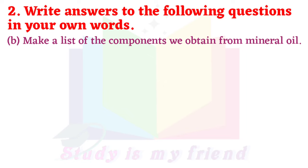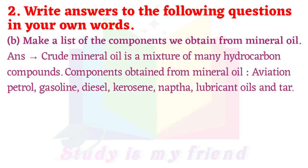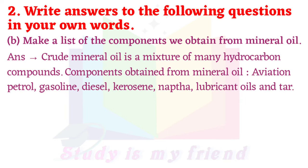B. Make a list of components we obtain from mineral oil. Crude mineral oil is a mixture of many hydrocarbon compounds. Components obtained from mineral oil are: aviation fuel, petrol, gasoline, diesel, kerosene, naphtha, lubricant oil and tar.